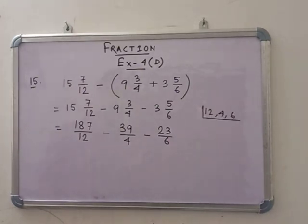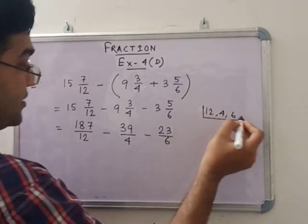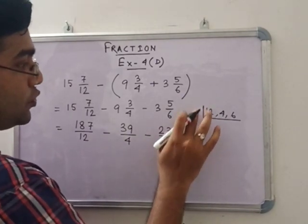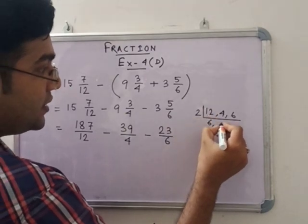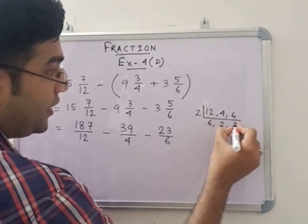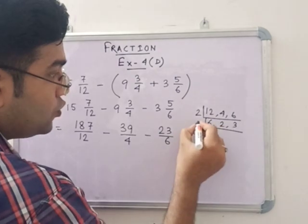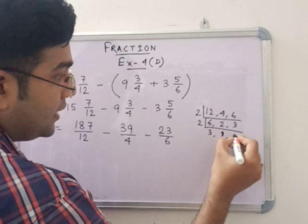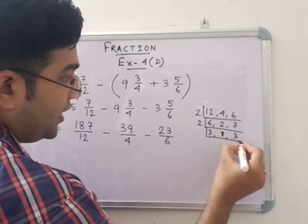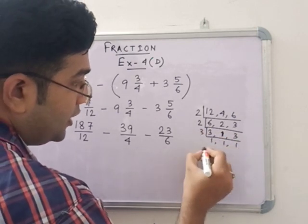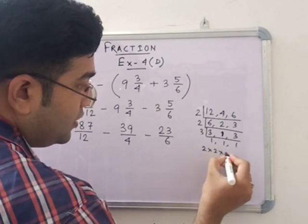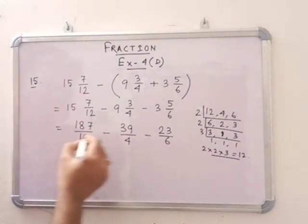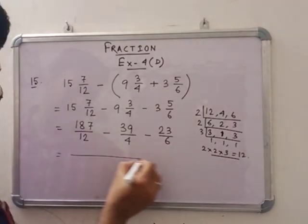Now the LCM of 12, 4, and 6 of the denominators: if we go into 2 first, so 2 into 6, 2, 3. Then again 2: this is 3, this is 1, and this is 3. Now again 3, so 1, 1, 1. That means 2 into 2 into 3, that means 12. So 12 is the LCM here.